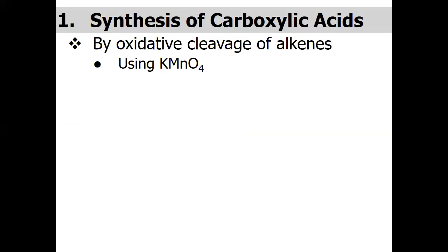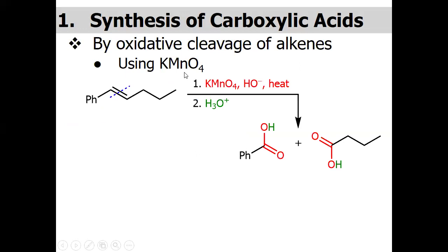Regarding the synthesis of carboxylic acid, the first method is generally used by oxidative cleavage of alkenes. In this example we have a disubstituted alkene which is cleaved using a strong oxidizing agent, KMnO4. Under basic conditions upon heating it will give the carboxylate salt, and on workup it will give two carboxylic acid compounds.